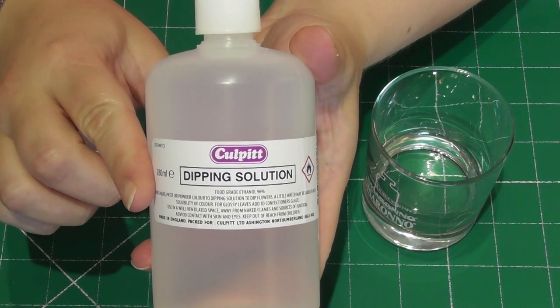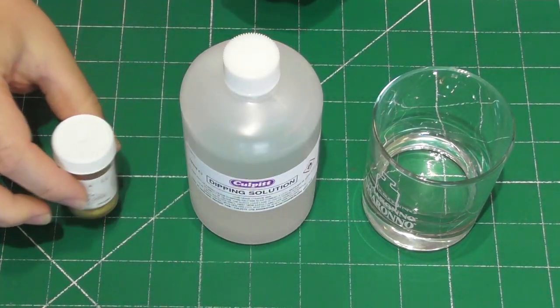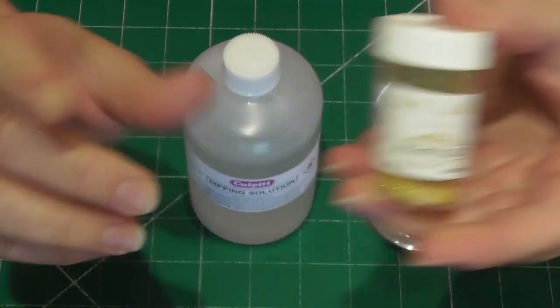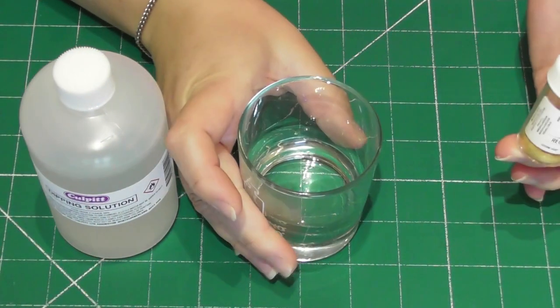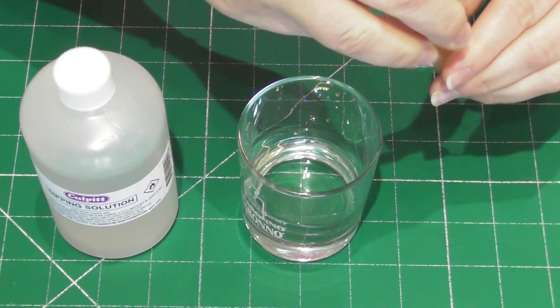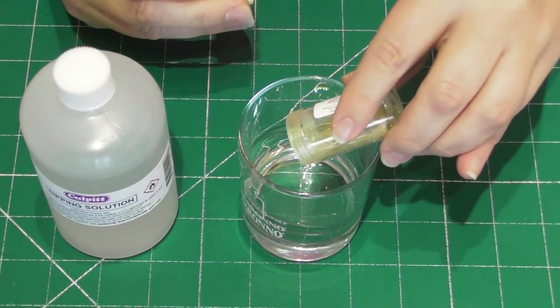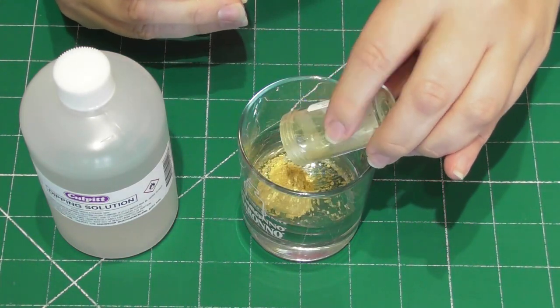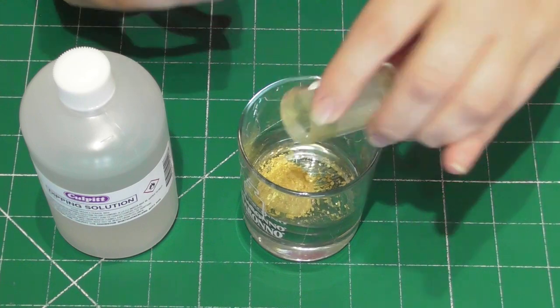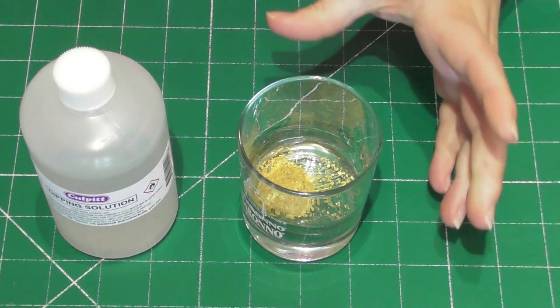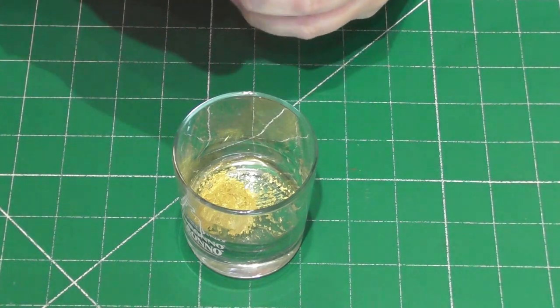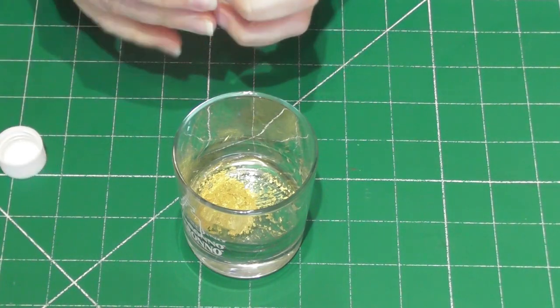So let's pretend you're making yours from real chocolate. Here I have dipping solution which has a very high alcohol content and the Regency Gold by Fade Corner. You can use any luster dust that you want. Simply mix the dipping solution with the luster dust. You don't want much of the dipping solution with this.